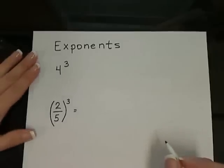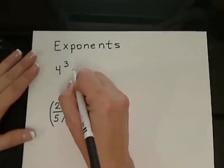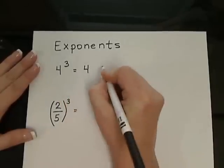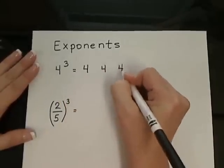Exponents are repeated multiplication. So 4 to the third means for us to write 4 three times and multiply.